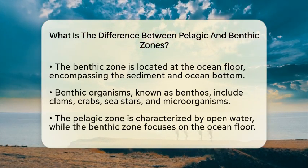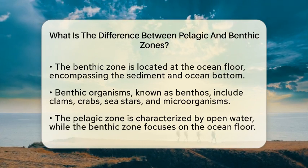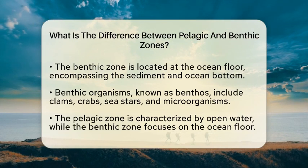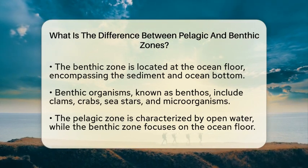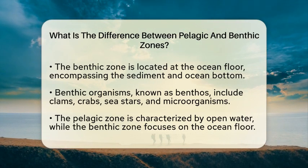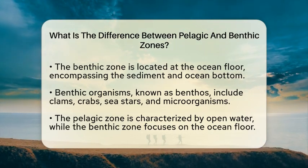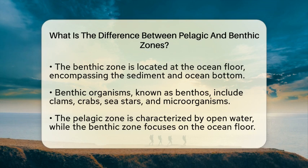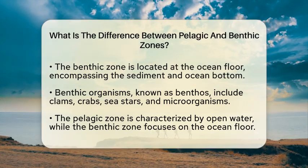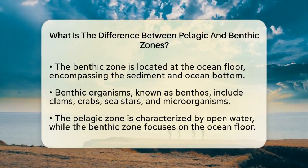On the other hand, the benthic zone is located at the very bottom of the ocean. This zone includes the ocean floor and the sediment that lies on it. It stretches from shallow coastal areas to the deep abyssal plains and trenches. The organisms that live in the benthic zone, known as benthos, include clams, crabs, sea stars, and various microorganisms. These creatures thrive on or within the seabed, where they have adapted to the specific conditions of their environment.